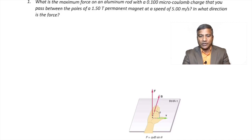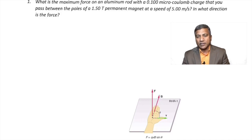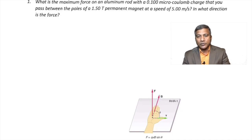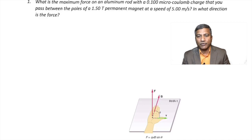Question number one: What is the maximum force on an aluminum rod with a 0.100 microcoulomb charge that you pass between the poles of a 1.50 Tesla permanent magnet at a speed of 5.00 meters per second? In what direction is the force? We are asked to find the maximum force on the rod passing through the magnet at that speed.